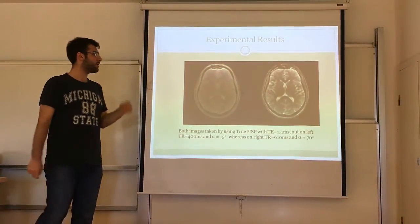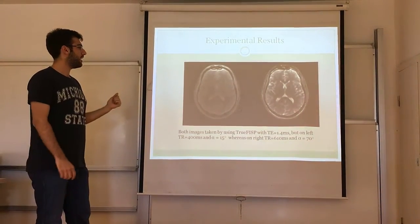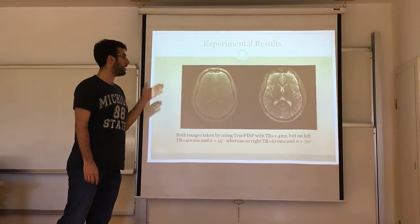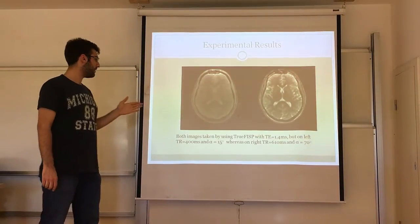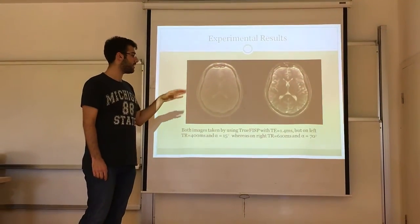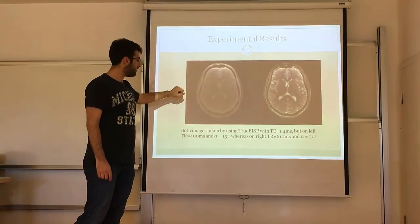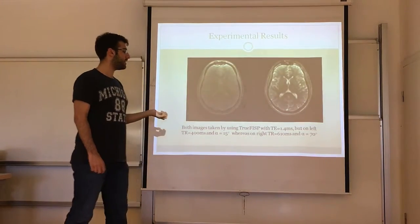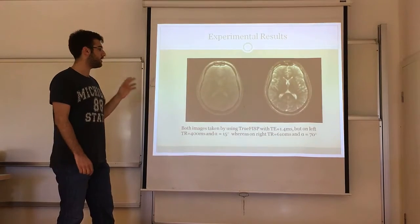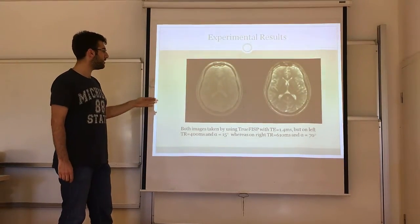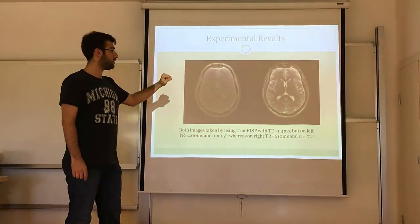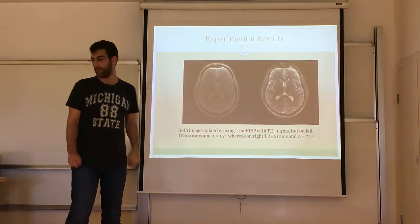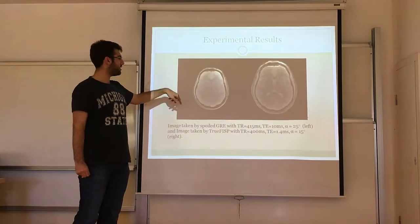My second result is about the effect of flip angle. These images are taken at UMRAAM: two brain MRI images taken with TE 1.4 ms, with TRs of 400 ms and 610 ms. The flip angle for the first image is 15 degrees and for the second is 70 degrees. Since the TRs are very long compared to T2 values, we can see mainly the effect of flip angle. As we increase the flip angle, we get a much sharper contrast difference between tissues, whereas a smaller flip angle gives an image similar to the spoiled gradient echo pulse sequence.